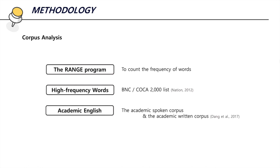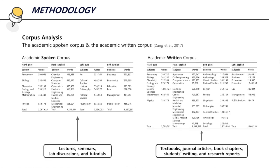The corpus analysis was conducted using the Range program to investigate the proportion of high frequency words in academic spoken and written English, and BNC and COCA 2000 EAP was used for indicating high frequency words. Academic English in this article is represented by Teng et al.'s academic spoken corpus and the academic written corpus. These tables show the composition of the academic spoken and written corpus. Each corpus has more than 13 million words and consists of four academic fields: hard pure, hard applied, soft pure, and soft applied.